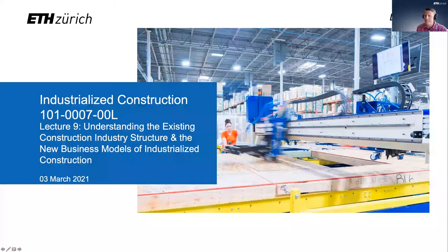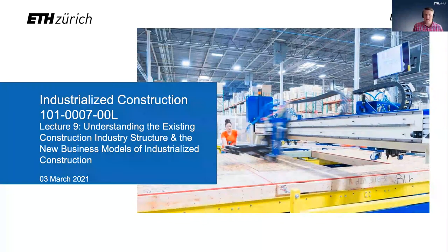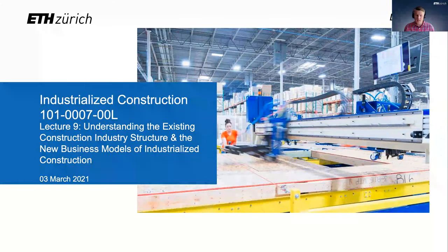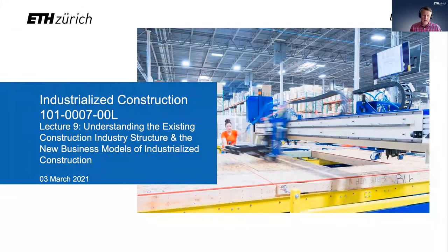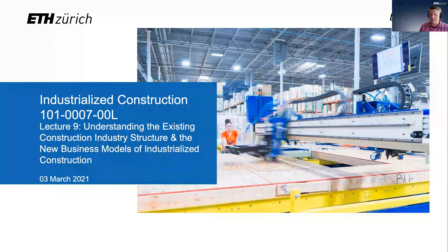Throughout this course, we've been looking specifically at different aspects of industrialized construction — about the customer, about the production system, about the supply chain and logistics. Today I want to take a step back. It's going to be one of two classes in a row where we look at what's happening to construction and how the overall industry is changing.